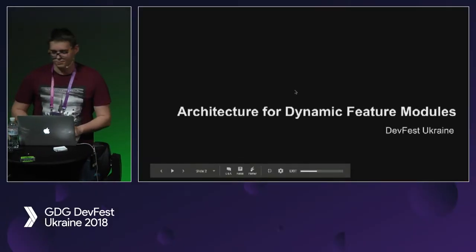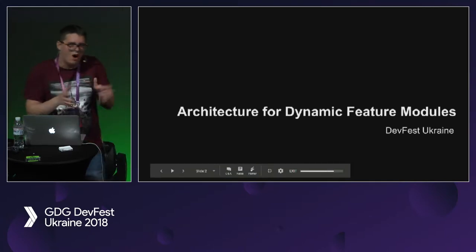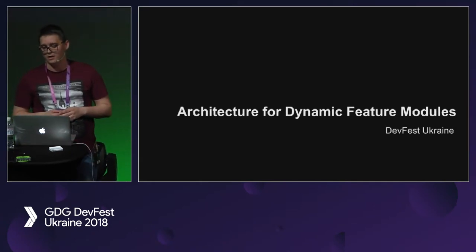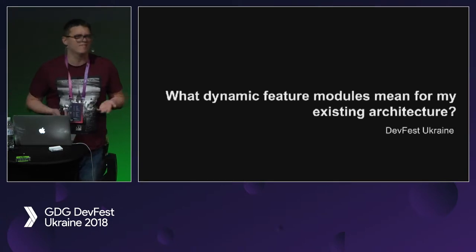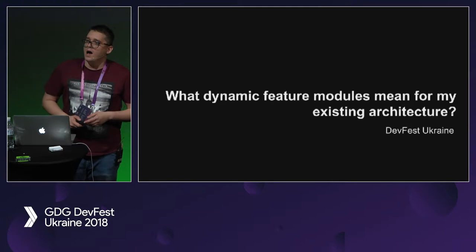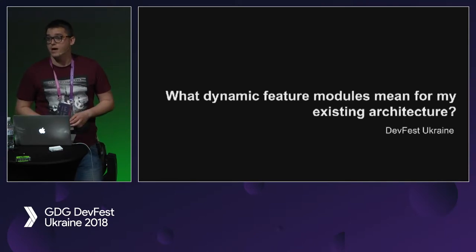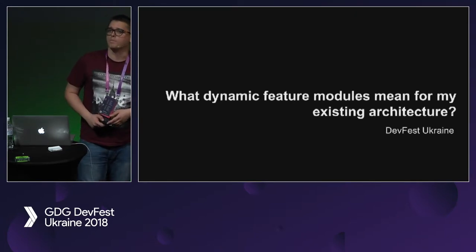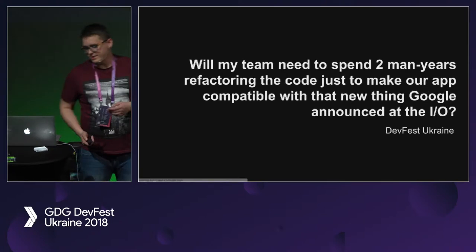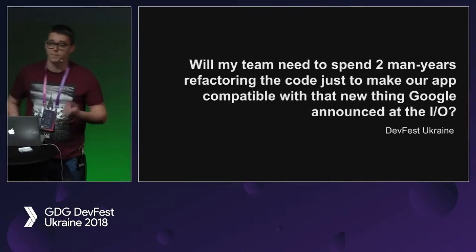Welcome to my talk: Architecture for App Bundles. I'd like to focus today on the architecture for dynamic feature modules specifically, and what dynamic feature modules that Google announced at I/O basically mean for your architecture — or what they meant for my architecture. The question I asked myself after Google announced app bundles for the first time was: will my team need to spend the next too many years rewriting the app to make it compatible with dynamic features?